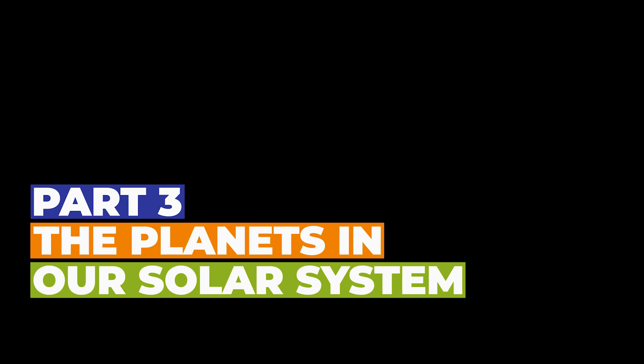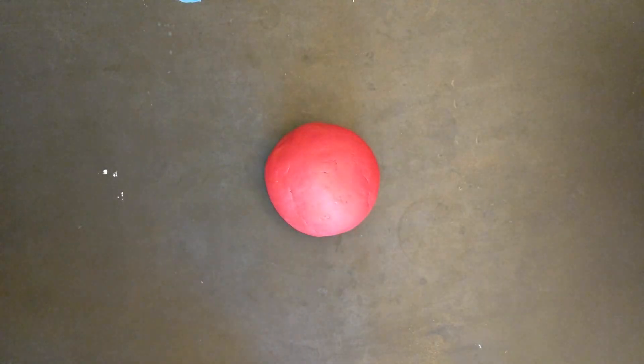Now for part three. Speaking of planets, let's take a look at the rest of them and how they compare to each other in size. So, for this lab, take out your clay again, a ruler with centimeters, and a magic wand.